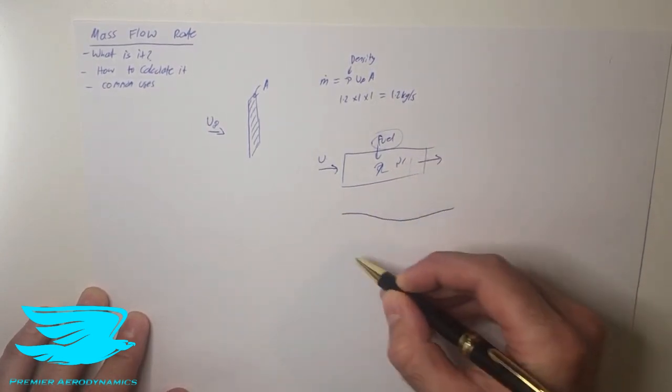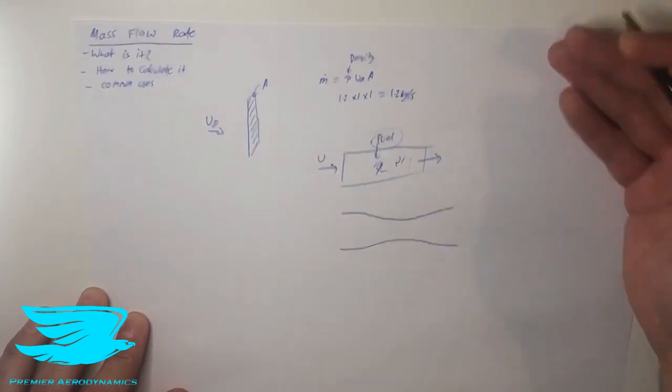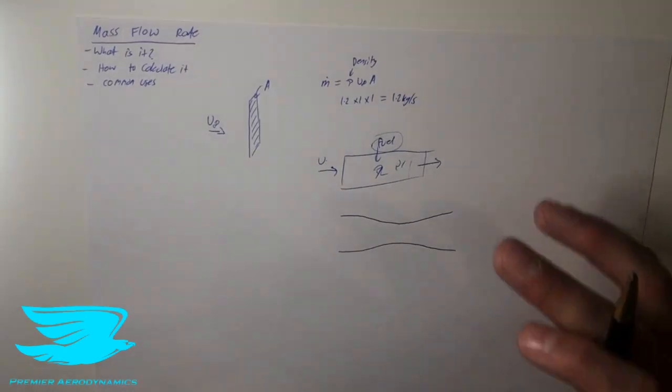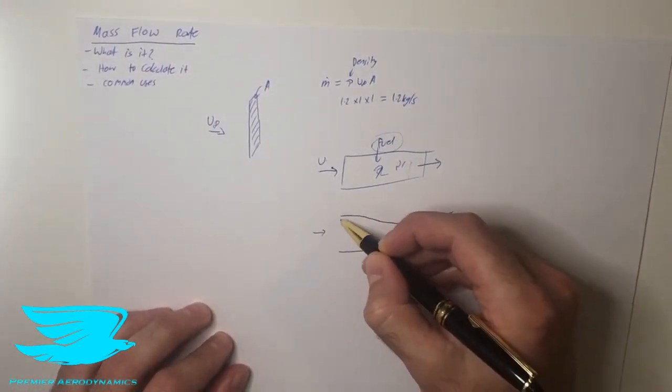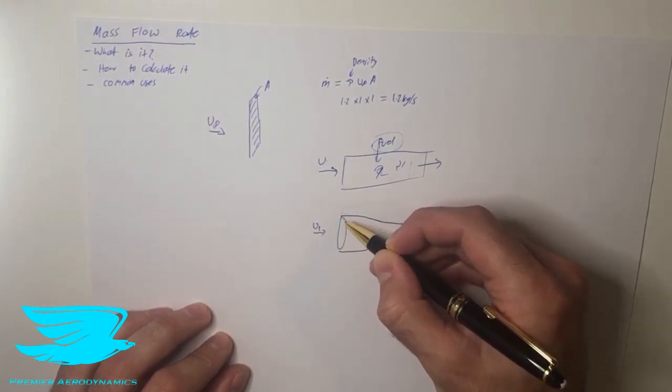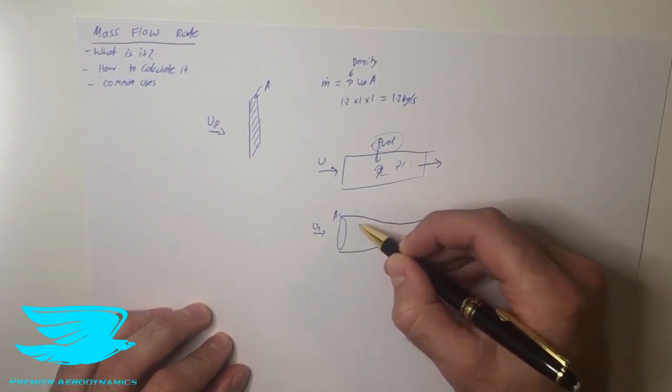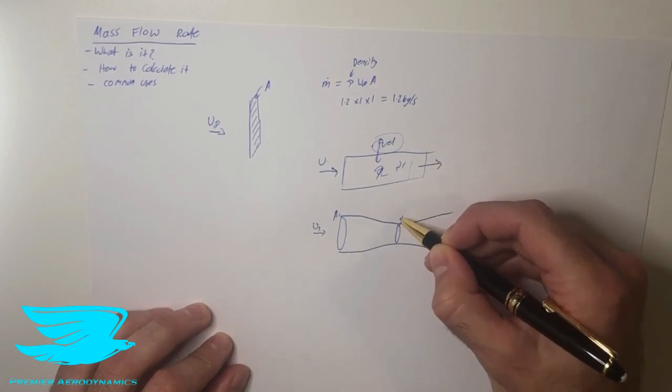Another very important use for this is in a converging diverging nozzle, or anything that approximates a converging diverging nozzle. So a converging diverging nozzle is one of the quintessential aerodynamic situations where we have the flow coming in and we have the velocity u1 and we have this area here, A1. It then, the contraction starts to occur, so the cross-sectional area starts to reduce and we go to A2 here.